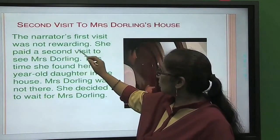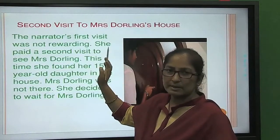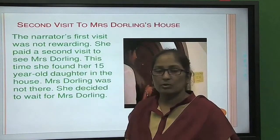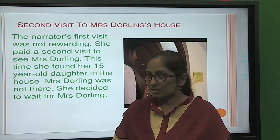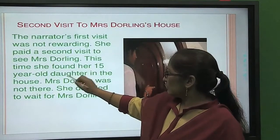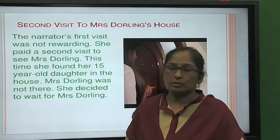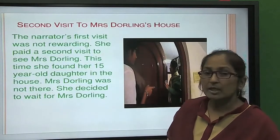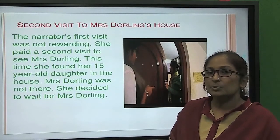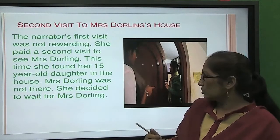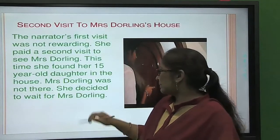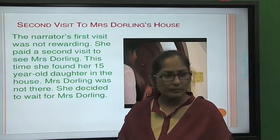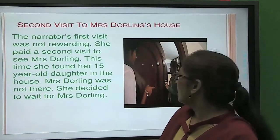The narrator's first visit was not rewarding — it was useless. This time, during the second visit, she found Mrs. Darling's 15-year-old daughter in the house and decided that she would wait for Mrs. Darling.